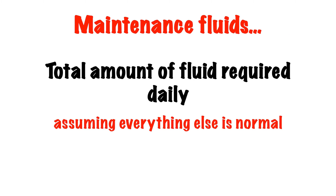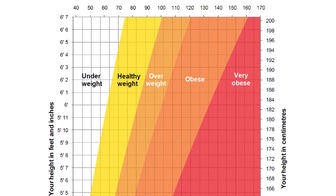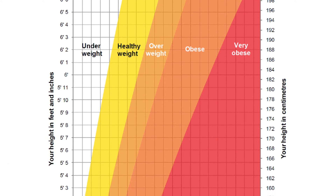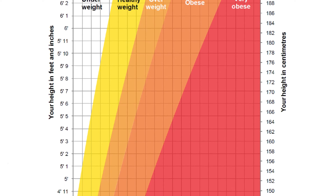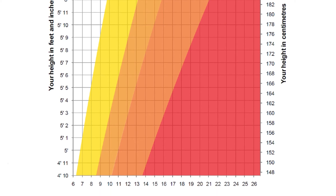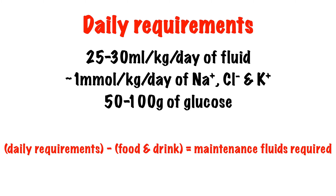Since this is a basic guide, we are going to look at maintenance fluid. Maintenance fluid is the total amount of fluid we require per day assuming everything else is normal. When prescribing maintenance fluids we need to use the patient's ideal body weight. Most patients' actual body weight will fall within this range if we look at a BMI chart, but be careful when dealing with obese patients and use their ideal weight rather than their actual weight, otherwise it will be easy to overload them. Our daily requirements are between 25 and 30 ml of fluid per kilogram per day, and very approximately 1 millimole per kilogram per day for each of sodium, chloride, and potassium. We also need about 50 to 100 grams of glucose per day to prevent starvation ketosis. It's important to remember that these figures include any eating and drinking that the patient may already be doing.